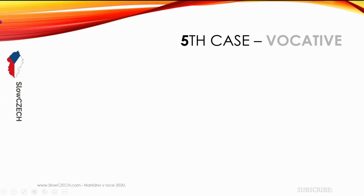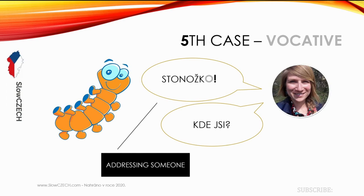The last one is the Vocative case. It may seem strange, but when you are addressing someone, talking to someone, or writing to someone, you change the ending of their name. Some people think Czechs are completely changing your name — but it's just the vocative case. For example, if you're talking to me: 'Eliško, jak se máš?' Or if you're writing to Stonožka, the centipede: 'Ahoj Stonožko, víš co.' If you're talking or writing to someone on messenger, you use the vocative case.